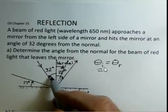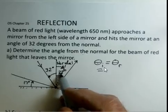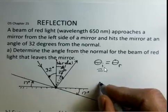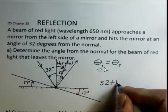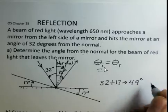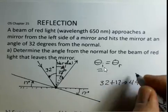It was 32 degrees. Our normal now is 17 degrees away from where the first one was. 32 plus 17, so we have 49 degrees for the theta i.